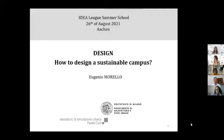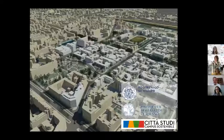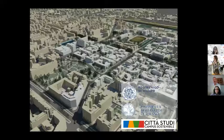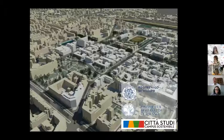I'd like to briefly introduce myself. I'm the delegate for environmental sustainability on campus. We also have other delegates working on social aspects, third mission, and international cooperation. My focus is on how we can really organize and manage a campus in a better way. This picture shows our main campus in Milan at Politecnico, which I'll be referring to throughout.